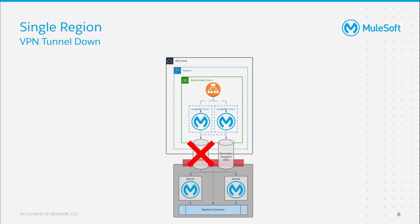For instance, this would not apply if VPN tunnel was the primary and Direct Connect was the secondary, or if Direct Connect was the primary and VPC Peering was the secondary — both connectivity methods need to be the same for this to apply. Customer-hosted runtimes are not required for this scenario; this could also be applied to a scenario where CloudHub runtimes connect directly to the customer systems via VPN tunnel. The solution described assumes that the VPN tunnel is the only thing that went down, and all other systems in the customer-hosted environment are available.